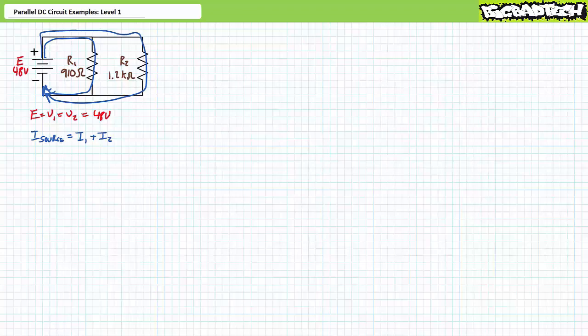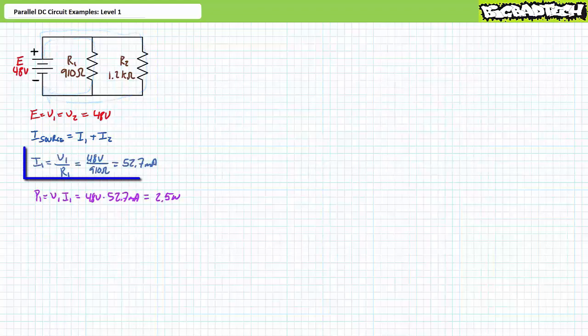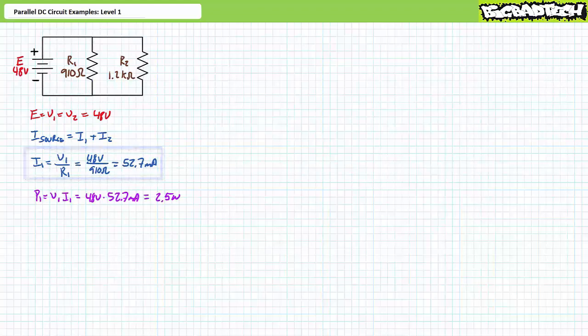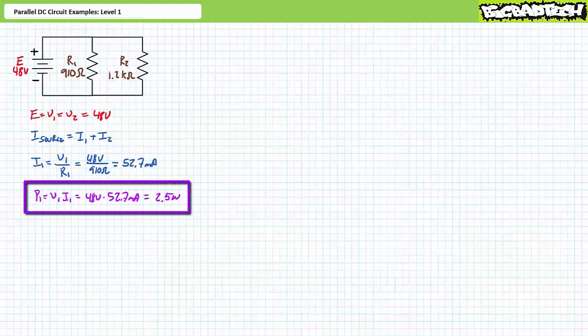Power in always equals power out; for this circuit, total power equals P1 plus P2. There are several ways to obtain the desired figures, but perhaps the easiest is through Ohm's law. I1 equals V1 over R1; substituting yields 52.7 milliamps. P1 equals V1 times I1; substituting yields 2.5 watts.